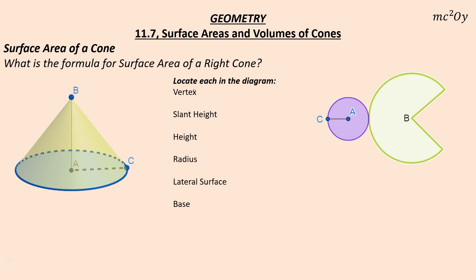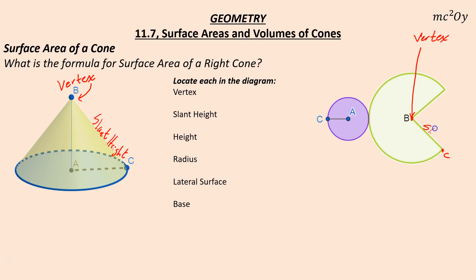First, the vertex. The vertex of the cone is up here at point B, and that would be point B here as well. It's also known as the vertex. The slant height runs from B to C — it's a slanted height, that's why we call it a slant height. The same thing would apply here; this could be point C right here — slant height.